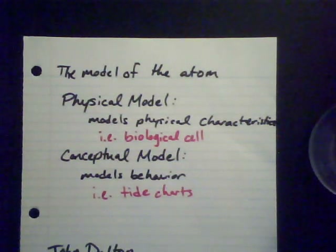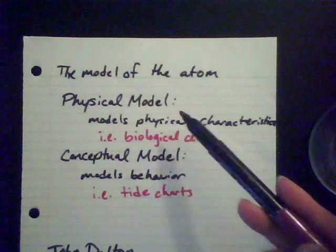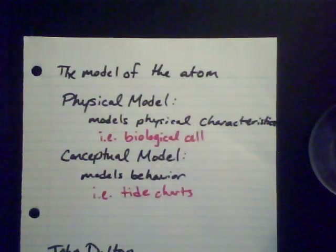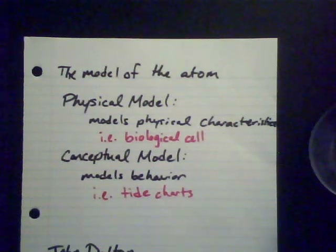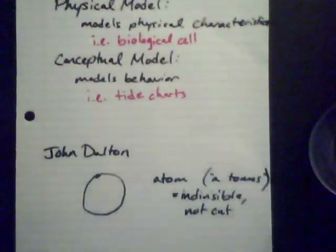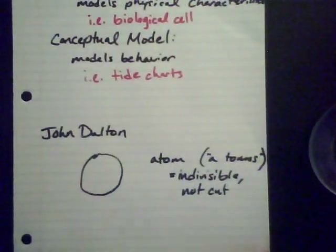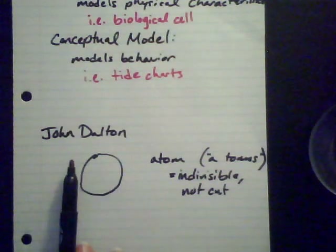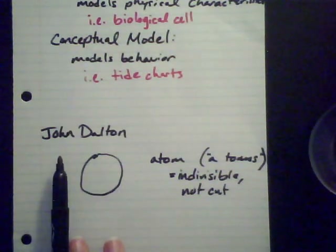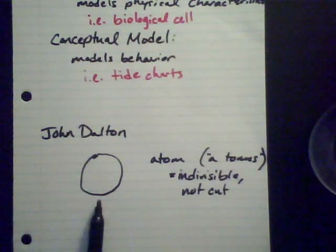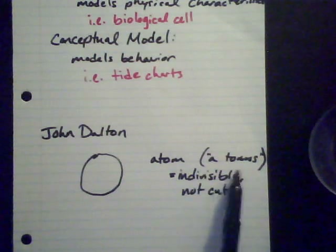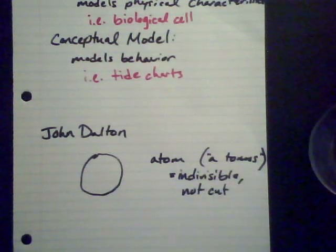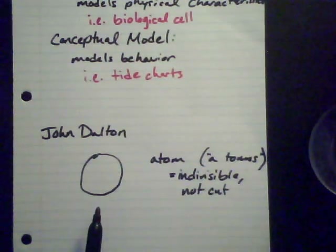Atoms, when we're talking about models for atoms, can fall under both of these categories — either physical or conceptual, or sometimes combinations of both. So in order to talk about how the model of the atom has changed, we have to talk about where we started. When we left off discussing history, we talked about John Dalton, the father of modern atomic theory, who said that everything is made up of atoms. These atoms are indivisible — from the Greek term 'atomos,' meaning indivisible or not cut.